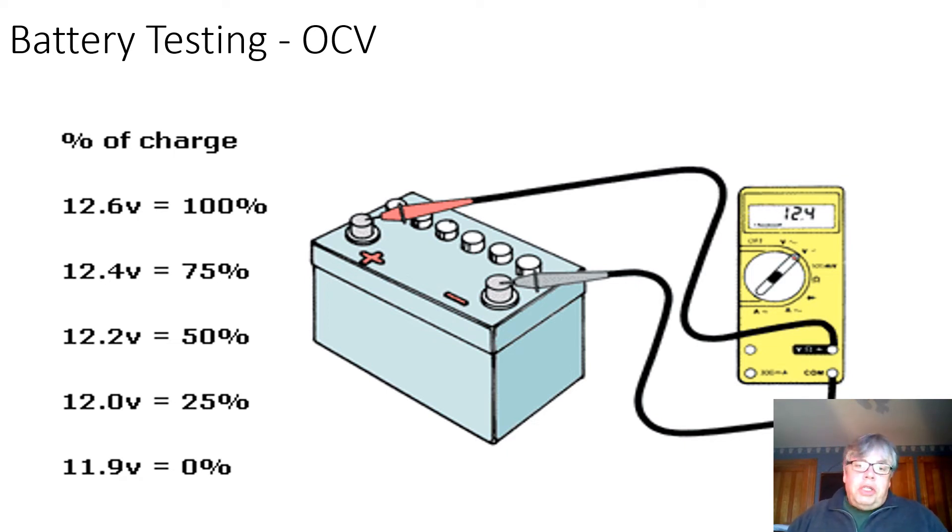That's because there are six cells, each cell produces 2.1 volts. Six times 2.1 is 12.6 volts. On there you see what voltage happens with different percentages of charge. This is a helpful test, but it can trick you too. It says nothing about the amperage available. You can have a fully charged battery that's 12.6 volts that does not provide you with enough amperage to start it.